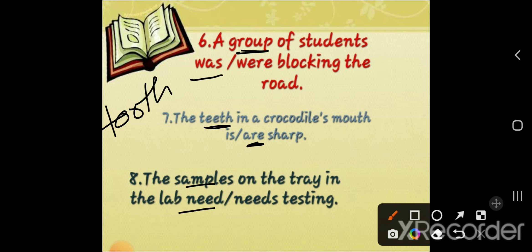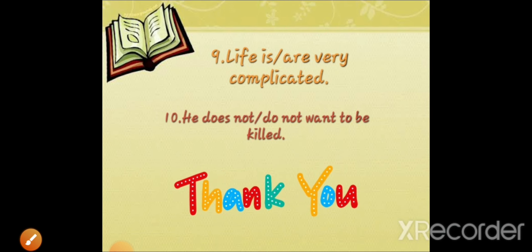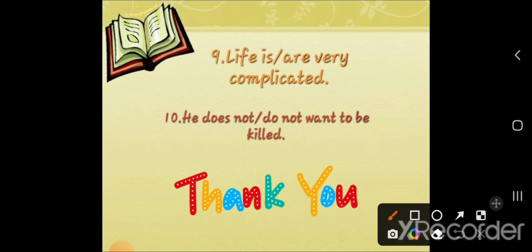The last two questions: Life is or are very complicated. Life is singular, so life is very complicated. Last question: He does not or do not want to be killed. With 'he' we use 'does not', so he does not want to be killed.